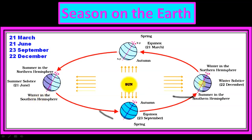The opposite condition occurs on 22nd December, when sun rays fall directly on the Tropic of Capricorn. The northern hemisphere is now far from the sun, while the southern hemisphere faces the sun directly — so there is summer in the southern hemisphere and winter in the northern hemisphere.